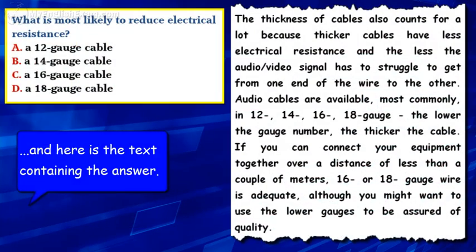And here is the text containing the answer. The thickness of cables also counts for a lot because thicker cables have less electrical resistance, and the less the audio-video signal has to struggle to get from one end of the wire to the other. Audio cables are available most commonly in 12, 14, 16, and 18-gauge. The lower the gauge number, the thicker the cable. If you can connect your equipment together over a distance of less than a couple of meters, 16 or 18-gauge wire is adequate, although you might want to use the lower gauges to be assured of quality.